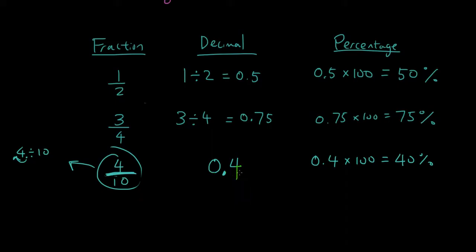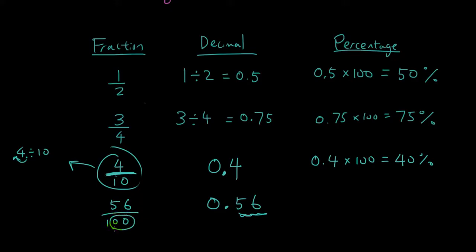When there's one digit after the decimal point you divide by 10; if there's two digits — for example 0.56 — there are two digits, so you divide 56 by 100. So however many numbers there are after the decimal point, that's how many zeros you divide by. So 56 divided by 100, and then 0.56 times 100 is 56%.